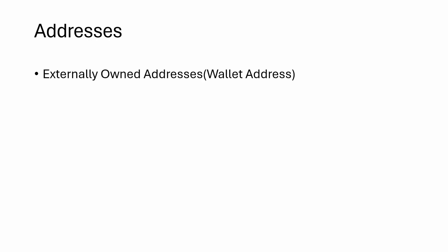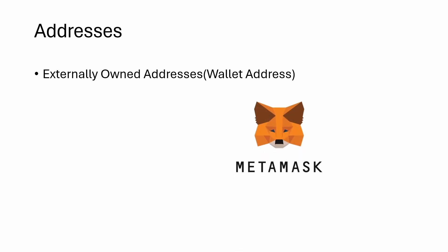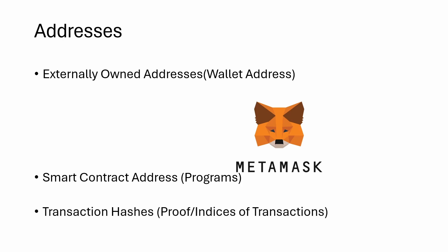In the blockchain, we have externally owned addresses, which represent wallet addresses or human owners. The MetaMask wallet or Ethereum account we created using MetaMask in the previous video is an example of an externally owned address. Then we have smart contract addresses, which are addresses given to programs. We even have unique alphanumeric representations for transactions — these are known as transaction hashes or indices of transactions. So anything and everything on blockchain is traceable — that's the most important thing to understand.